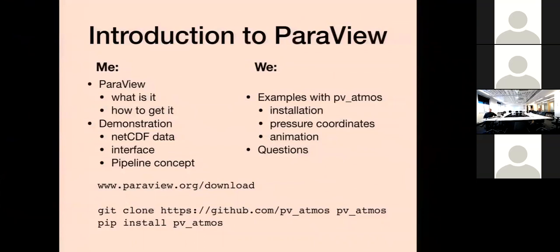The second part I'll still be running things, but you are very welcome and encouraged to follow along and do the same thing. For that you would need Paraview, and you would need another thing called PVatmos. The link to Paraview is paraboo.org - download if you'd like to install it. There should be no installation required even on Linux - it should just be binaries. It works for Linux, Windows, and Mac - just download it and it runs.